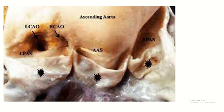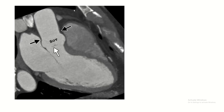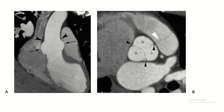If we cut the root of the ascending aorta and spread it, it looks like this: a valve pocket-like structure with outer bulgings and the origins of the coronary arteries. This is the radiological image — you can see the valve. This valve is thicker, this valve is thinner. So this is the left ventricle, this is the outer bulging, and this is the aortic sinus.